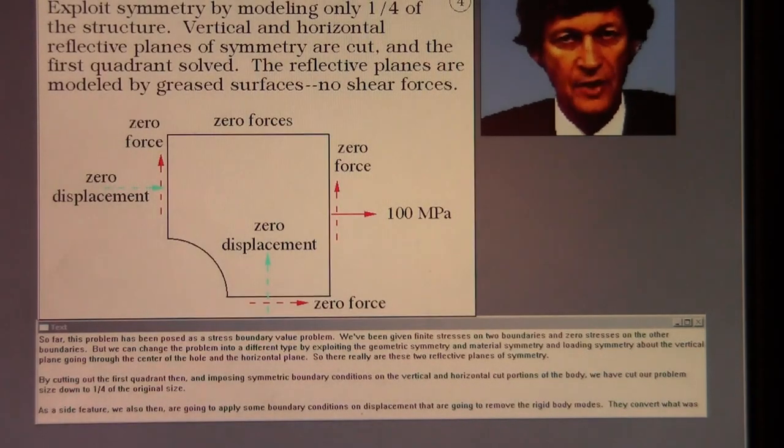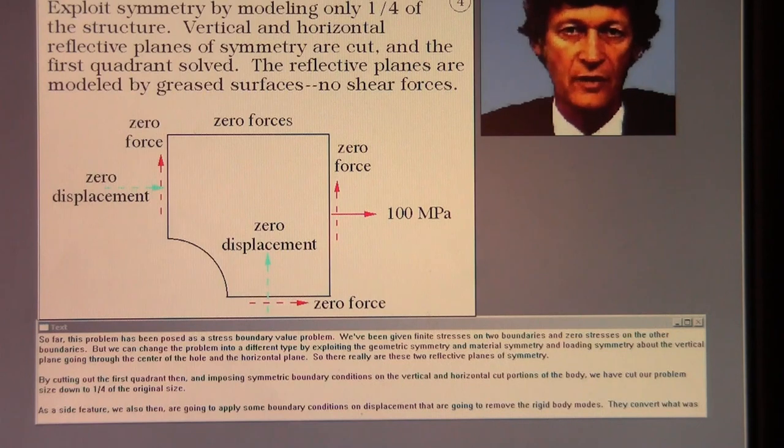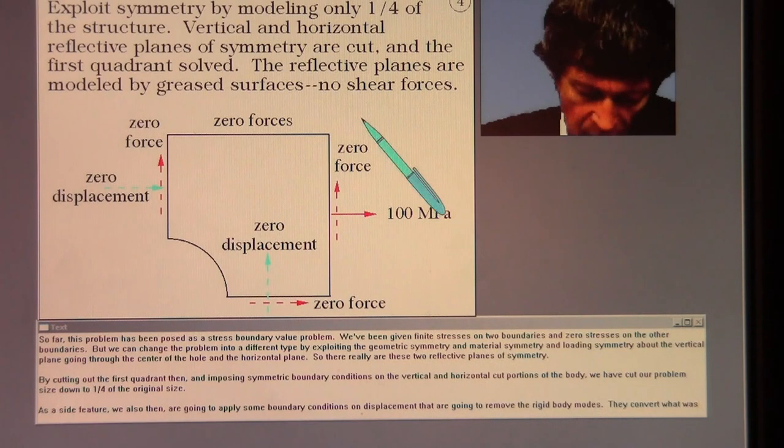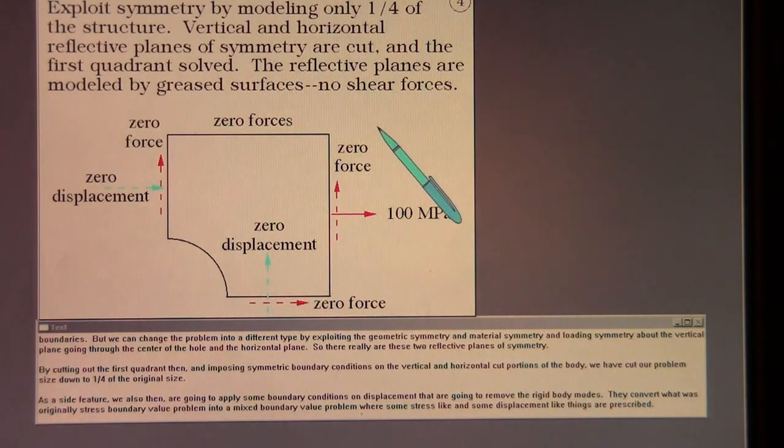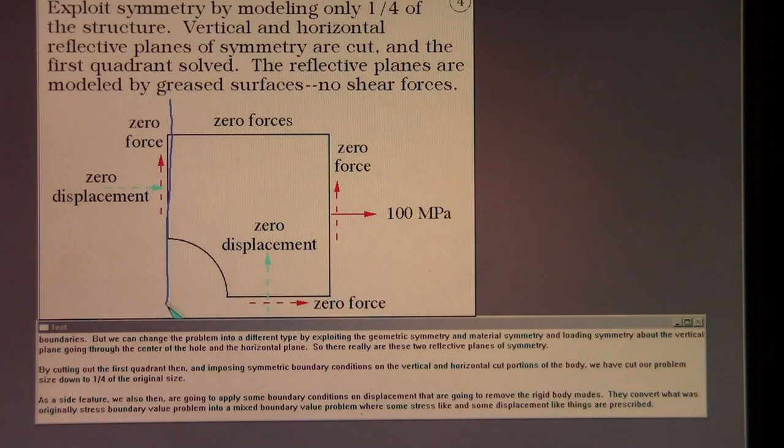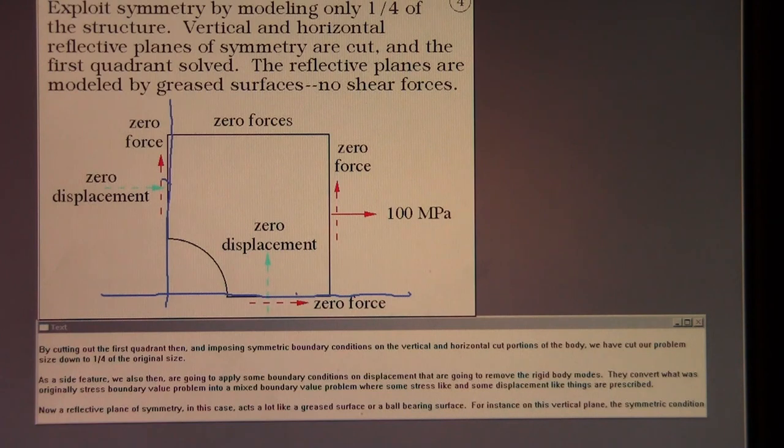So far this problem has been posed as a stress boundary value problem. We've been given finite stresses on two boundaries and zero stresses on the other boundaries. But we can change the problem into a different type by exploiting the geometric symmetry and material symmetry and loading symmetry about the vertical plane going through the center of the hole and the horizontal plane. So there really are these two reflective planes of symmetry. By cutting out the first quadrant then and imposing symmetric boundary conditions on the vertical and the horizontal cut portions of the body, we have cut our problem size down to one quarter of the original size.